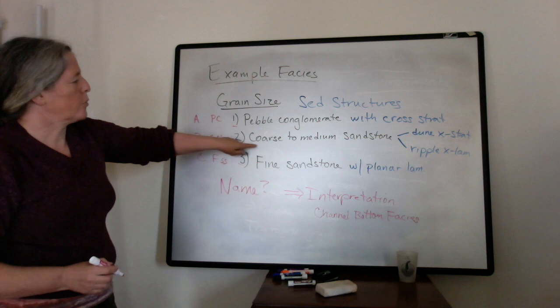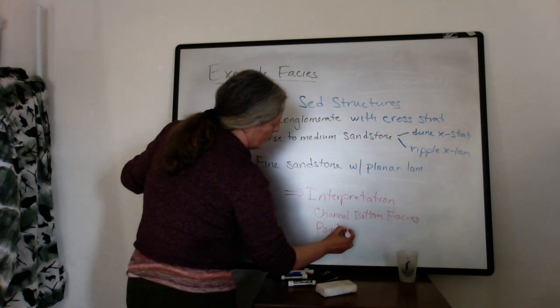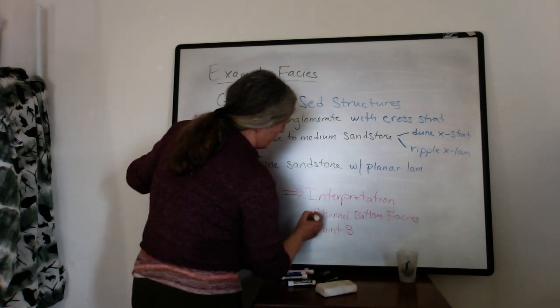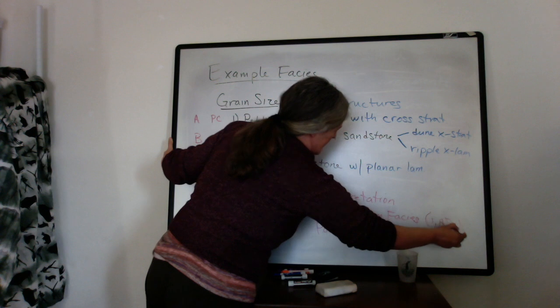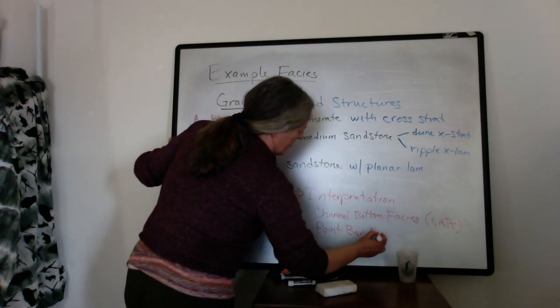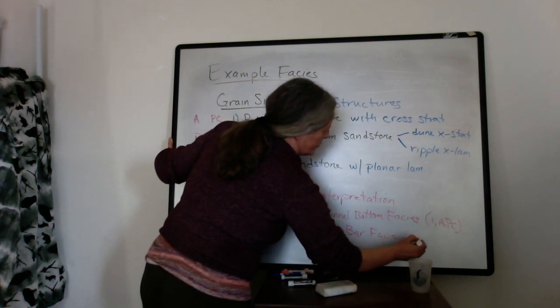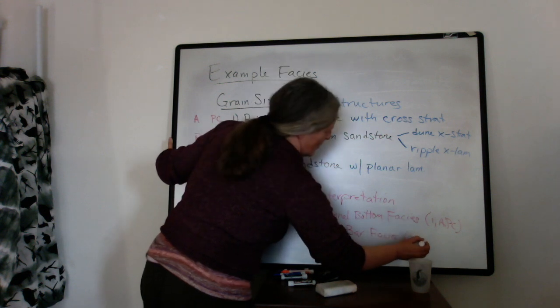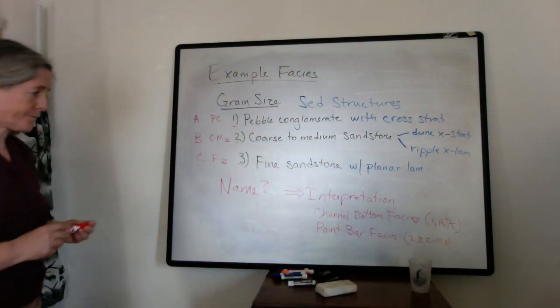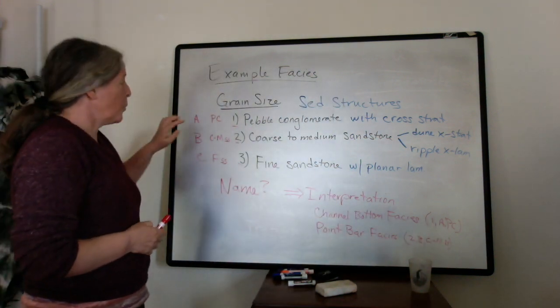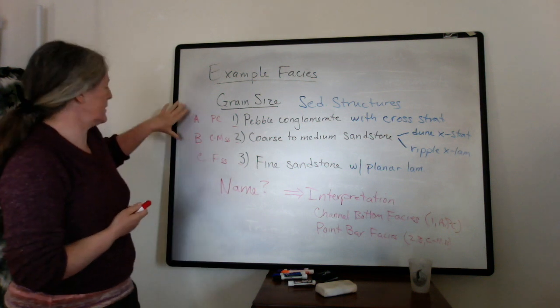And often the coarse to medium sand are on what we call a point bar. So we might call that, so this would be 1 or A or PC. The point bar facies would be the equivalent of 2, B, or the CMSS.